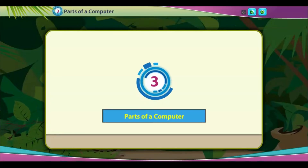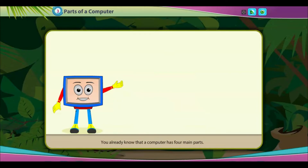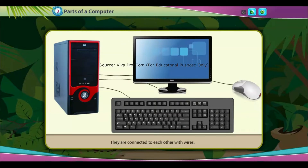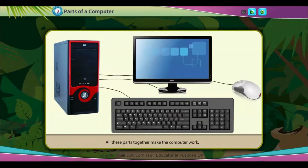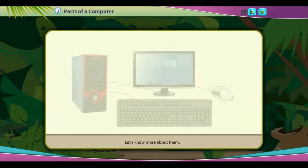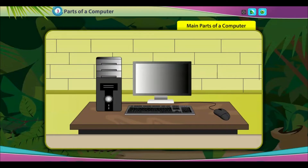Chapter 3: Parts of a Computer. You already know that a computer has four main parts. They are connected to each other with wires. All these parts together make the computer work. Let's know more about them.